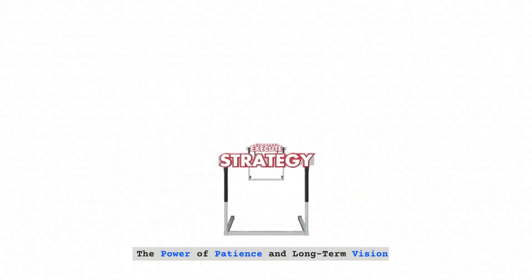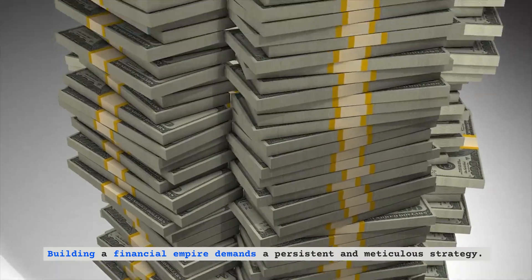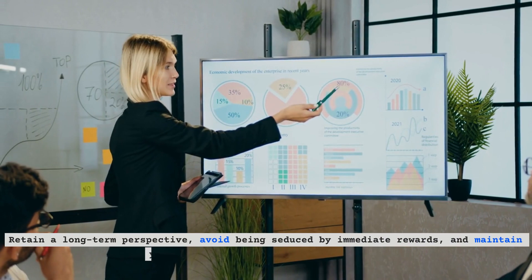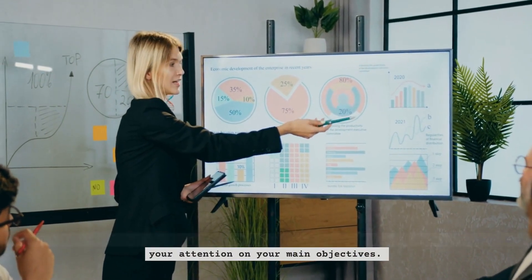The power of patience and long-term vision. Building a financial empire demands a persistent and meticulous strategy. Retain a long-term perspective, avoid being seduced by immediate rewards, and maintain your attention on your main objectives.